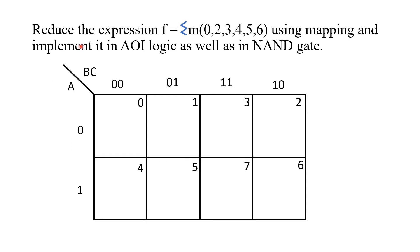Let us do this example: Reduce the expression F = Σm(0, 2, 3, 4, 5, 6) using mapping and implement it in AOI logic as well as NAND logic. Since the notation used is Σm (summation of min terms), this is a SOP expression, and we must place ones in the K-map at positions 0, 2, 3, 4, 5, and 6.